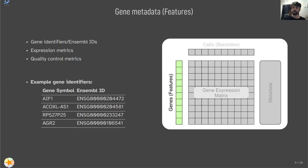The next component is the gene metadata, commonly referred to as features. This contains metadata about genes, such as gene identifiers or Ensembl IDs — a standardized format for storing gene IDs — as well as expression metrics and quality control metrics generated through single cell analysis tools. In the example table we have a couple of gene symbols and Ensembl IDs. Ensembl IDs have a common format that varies by species, and gene symbols are comprised of various characters. If you see data like this in a file, chances are you're looking at the gene metadata.